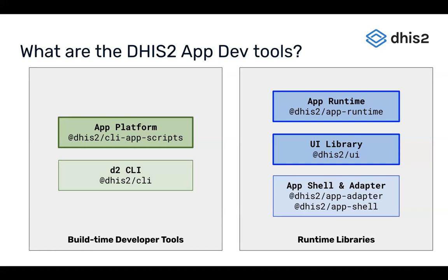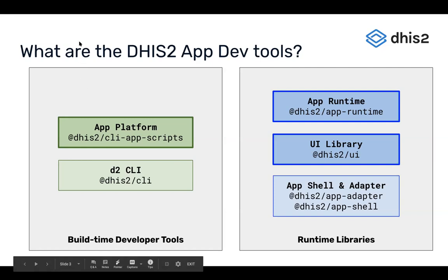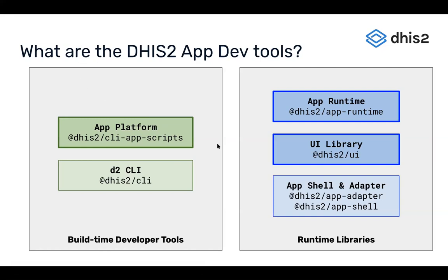So what do we provide for application development? There are two types of tools. On the left you have build-time developer tools — things that you as an application developer will use on your local machine to make it easier to create, maintain, and build DHIS2 applications. And then we also have runtime libraries — things that are running in the browser with your application as it's deployed to the user.